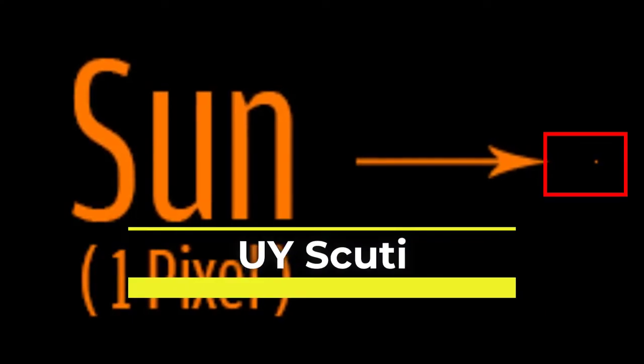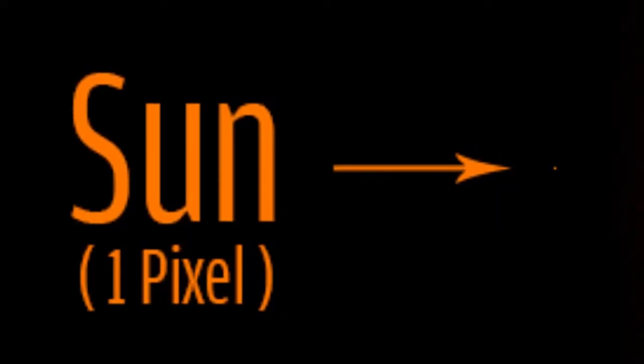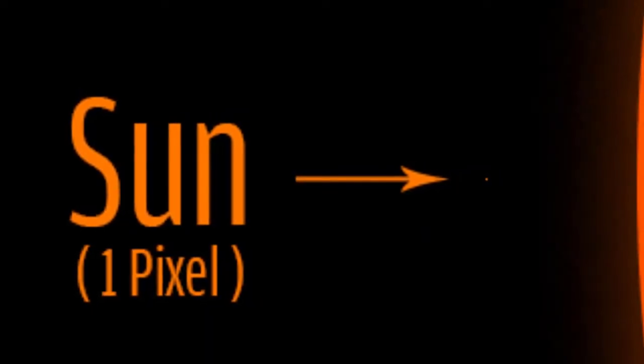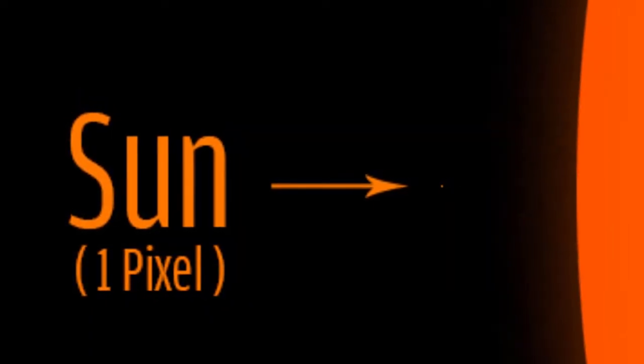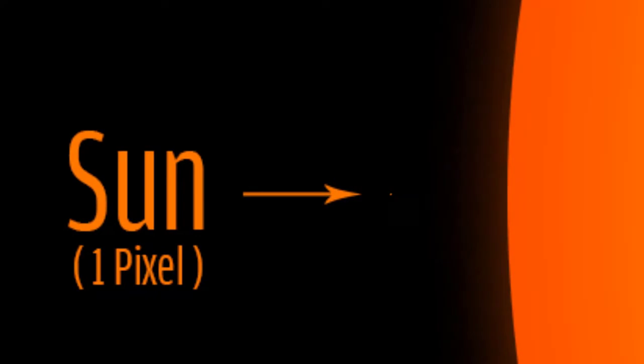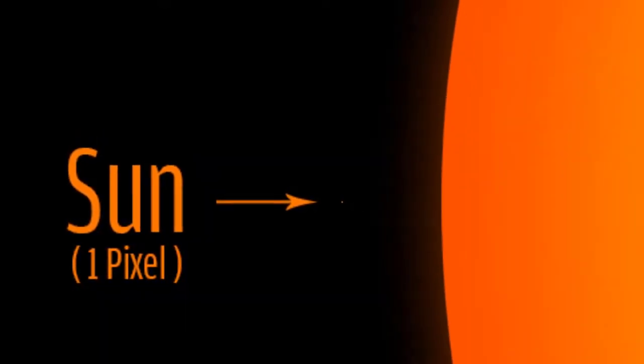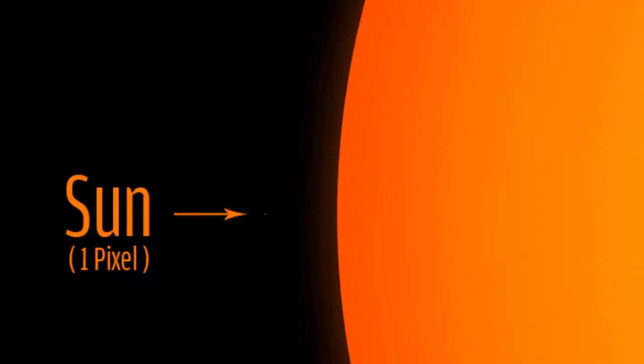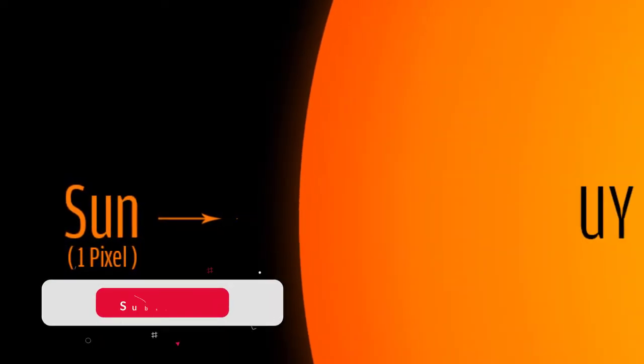The biggest star, UY Scuti (BD-12°5055), is an extreme red hypergiant or red supergiant star in the constellation Scutum. It is considered one of the largest known stars by radius and is also a pulsating variable star with a maximum brightness of magnitude 8.29 and a minimum of magnitude 10.56.